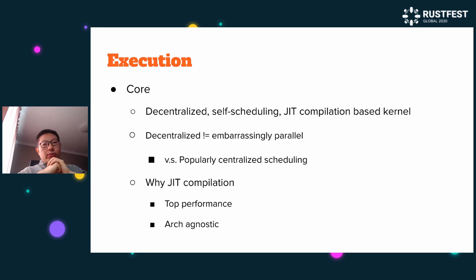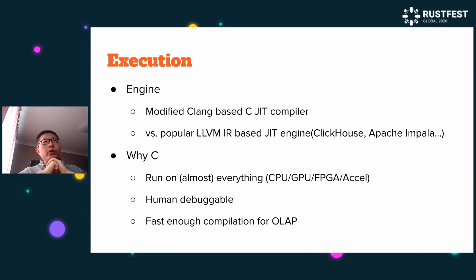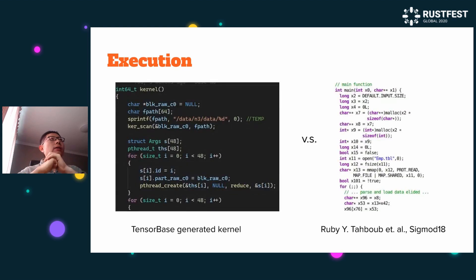Why JIT compilation? Because we want top performance. The engine uses a C-language-based JIT compiler, which you may compare with the popular LLVM IR-based JIT. Why C? Because C can run on almost everything — CPU, GPU, FPGA, and more. It's human-debuggable and highly hackable. And it's fast enough for compilation for OLAP. Here is TensorBase's generated kernel, which you can compare with the kernel source from the paper.